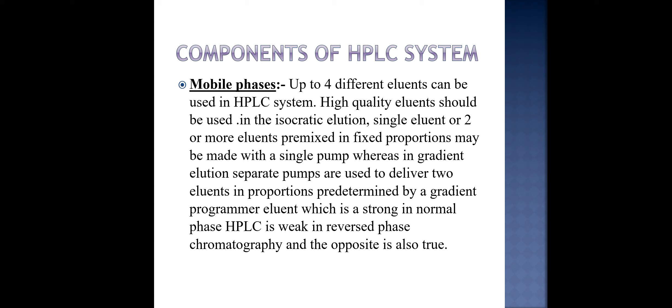What is mobile phase? Up to 4 different eluents can be used in HPLC system. High quality eluents should be used. In isocratic elution single eluent or 2 or more eluents premixed in a fixed proportion may be made with a single pump. Whereas in gradient elution separate pumps are used to deliver 2 eluents in proportion predetermined by gradient programmer. Basically 2 types of elution are there. Isocratic means same type of eluent or same type of solvent is used. And gradient means different type of solvents or different type of eluents are used. Eluents means solvent. And HPLC is weak in reversed chromatography and opposite is also true.